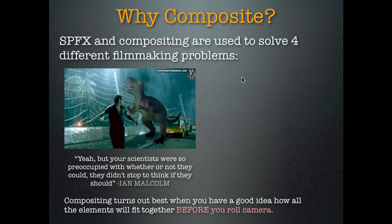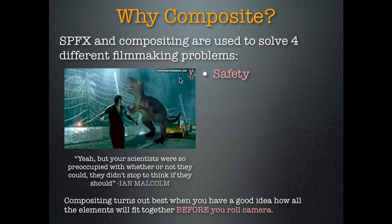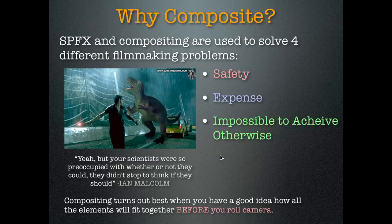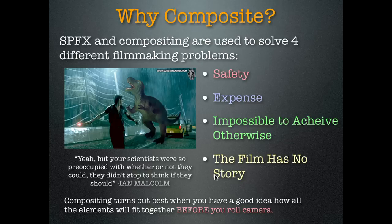Why do you composite stuff? There are four different filmmaking problems that compositing helps solve. One: Safety — being chased by a giant dinosaur is not safe. Two: Expense — it's very expensive to be chased by a dinosaur. Three: Impossibility — they're extinct. And four: you don't use this option just for special effects. Just because you can doesn't mean you should — think about what you're gonna do before you roll the camera.